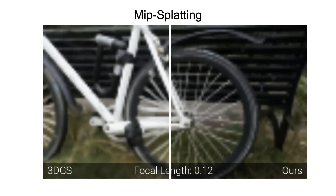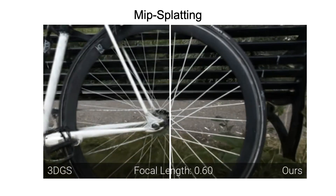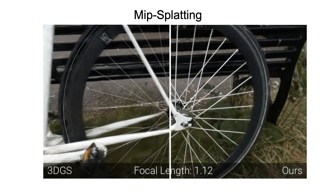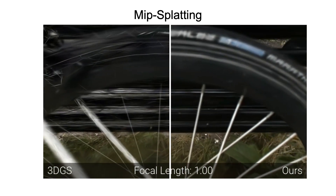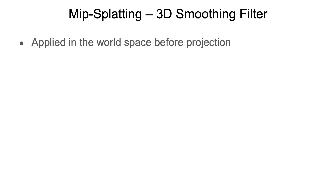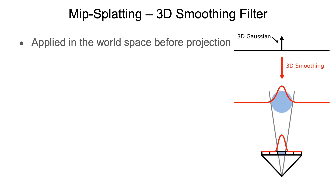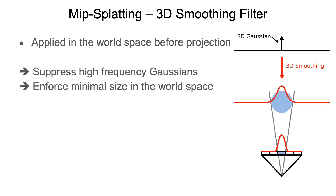MIP splatting eliminates these artifacts in a principled way and makes it anti-aliasing. First, we propose a 3D smoothing filter that is applied to the 3D Gaussians in the world space before projection. It regularizes the maximal frequency of 3D Gaussians and enforces their minimal size in the world space. Since the 3D smoothing filter is induced from training images and doesn't rely on the image to be rendered, it does not suffer from the dilation artifacts discussed previously.